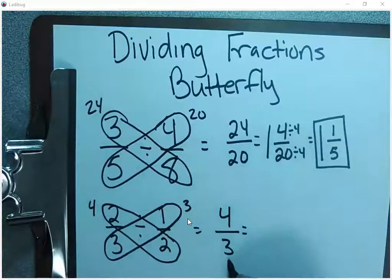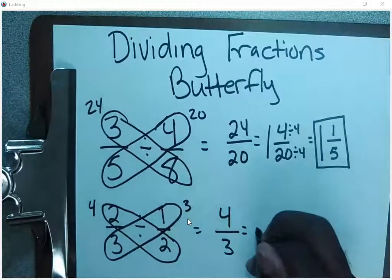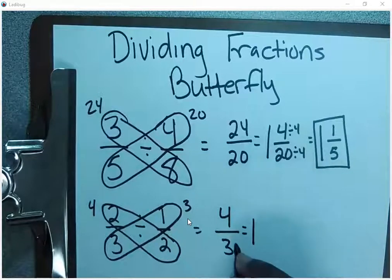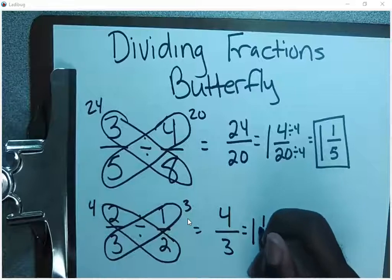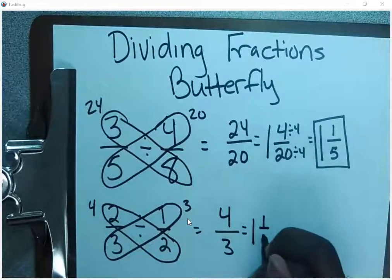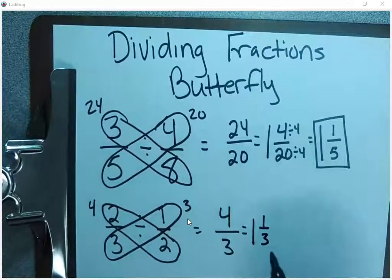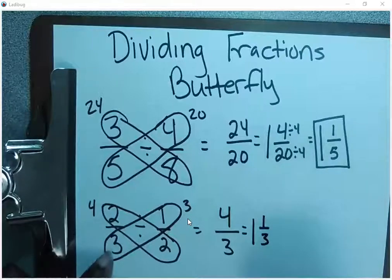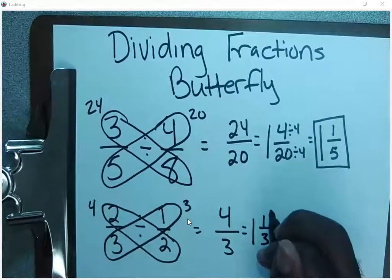Three can go into four one whole time. There's one left over, which becomes your numerator. And then three still stays your denominator. So my answer to two-thirds divided by one-half is one and one-third.